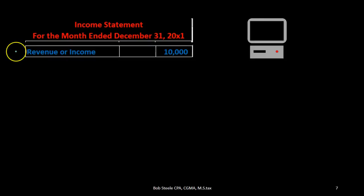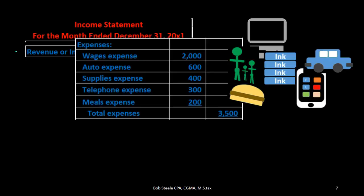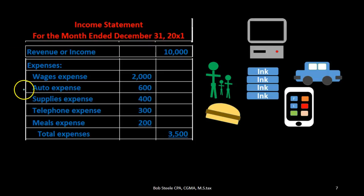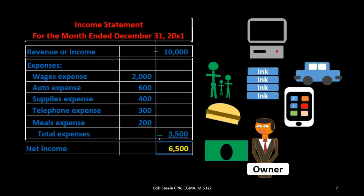Therefore our income statement, stated for the month ended December 1st through December 31st, shows revenue — the one line item, computer service — at $10,000. Then we subcategorize all the expenses: wages, auto, supplies, telephone, meals, adding up to $3,500. So our income statement equation — revenue minus expenses equals net income — gives us a bottom line net income of $6,500.